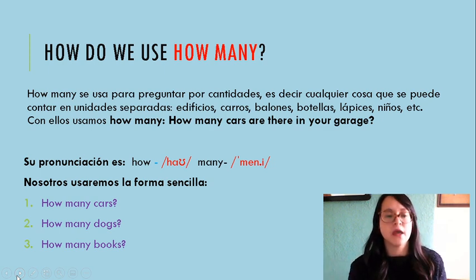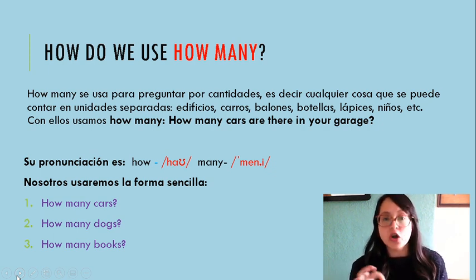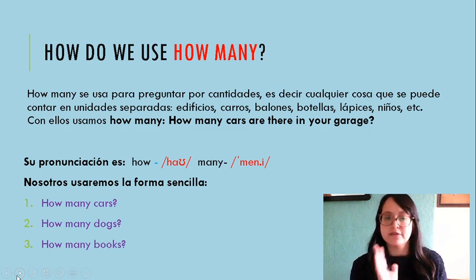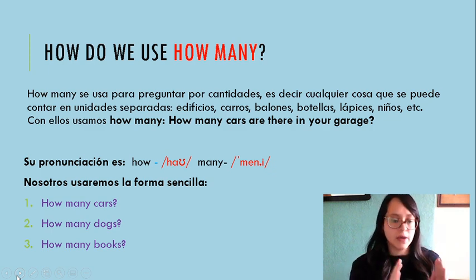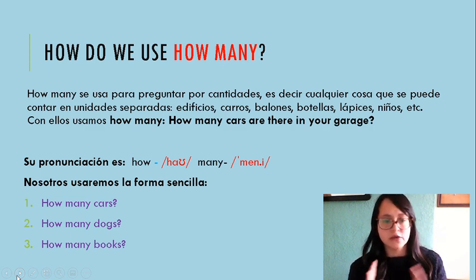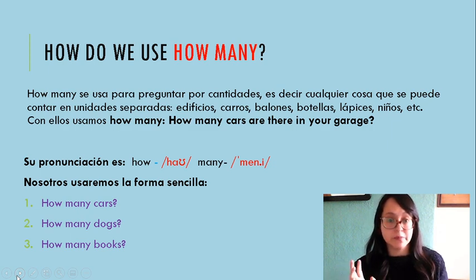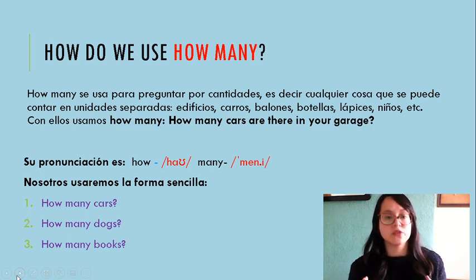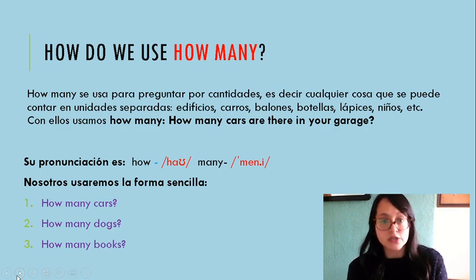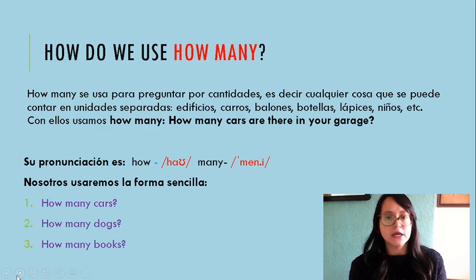Nosotros usaremos la forma sencilla de la oración. Por ejemplo: 'How many cars?' — cuántos carros. 'How many dogs?' — cuántos perros. 'How many books?' — cuántos libros. Esa es la forma sencilla: poner 'how many' y el elemento. 'How many' manzanas, 'how many' libros, cualquier elemento que se pueda contar por separado sirve. Recuerden que es para preguntar cuántos elementos tenemos.